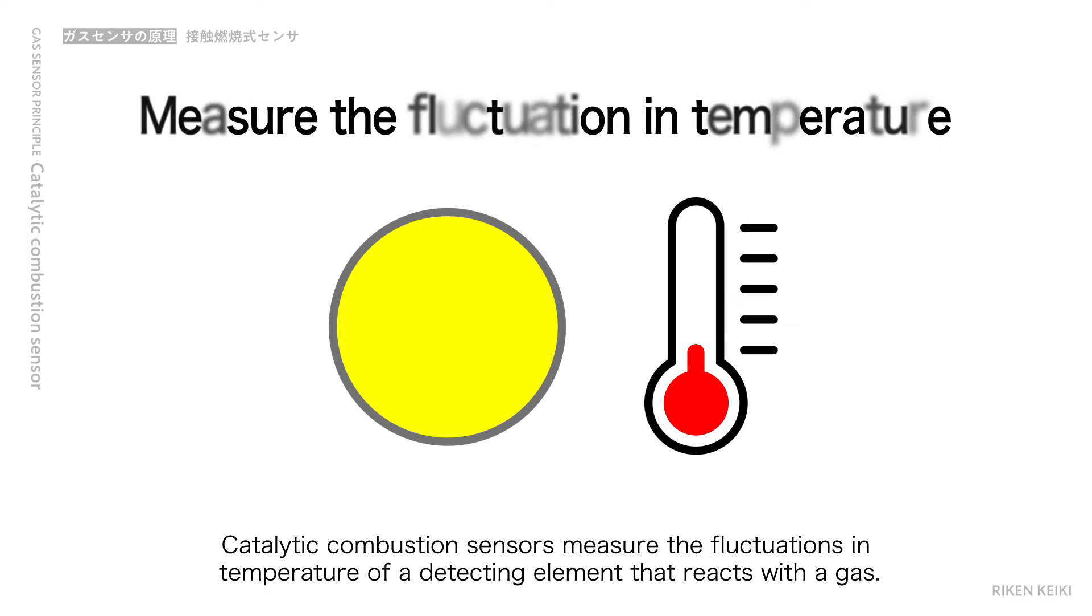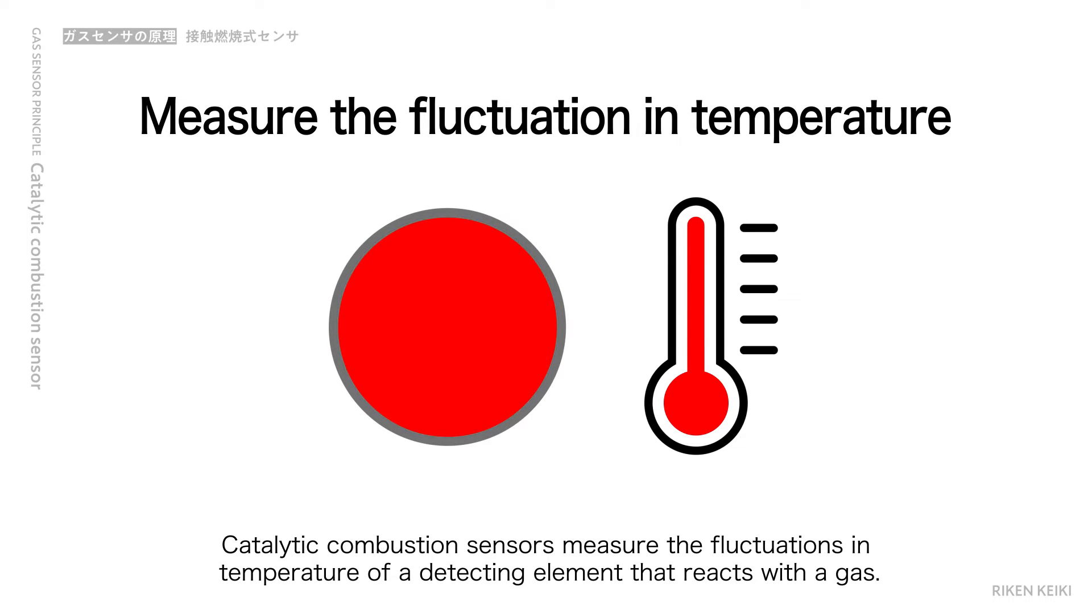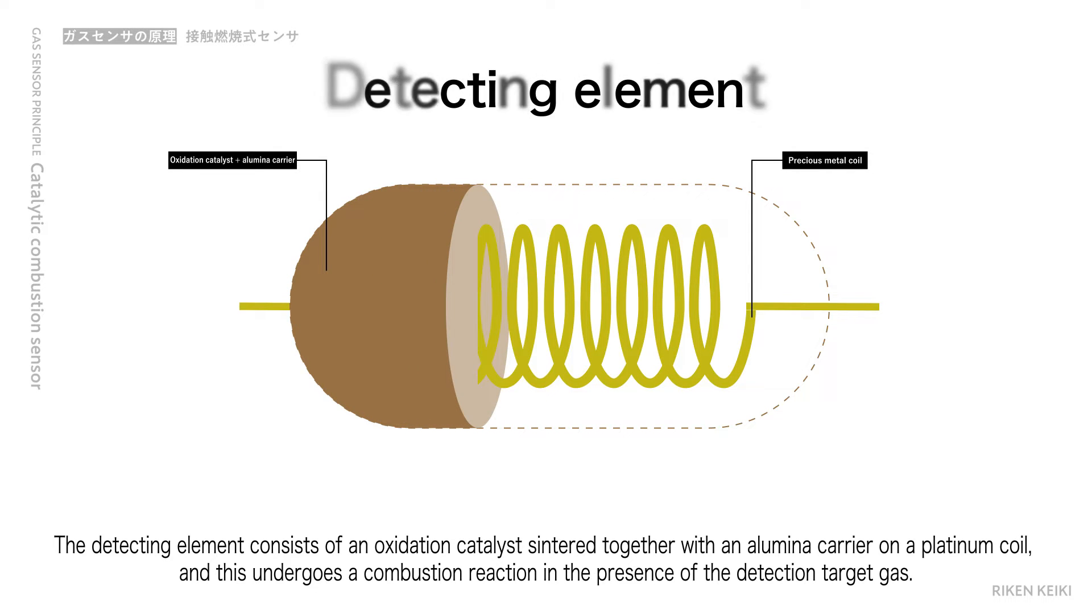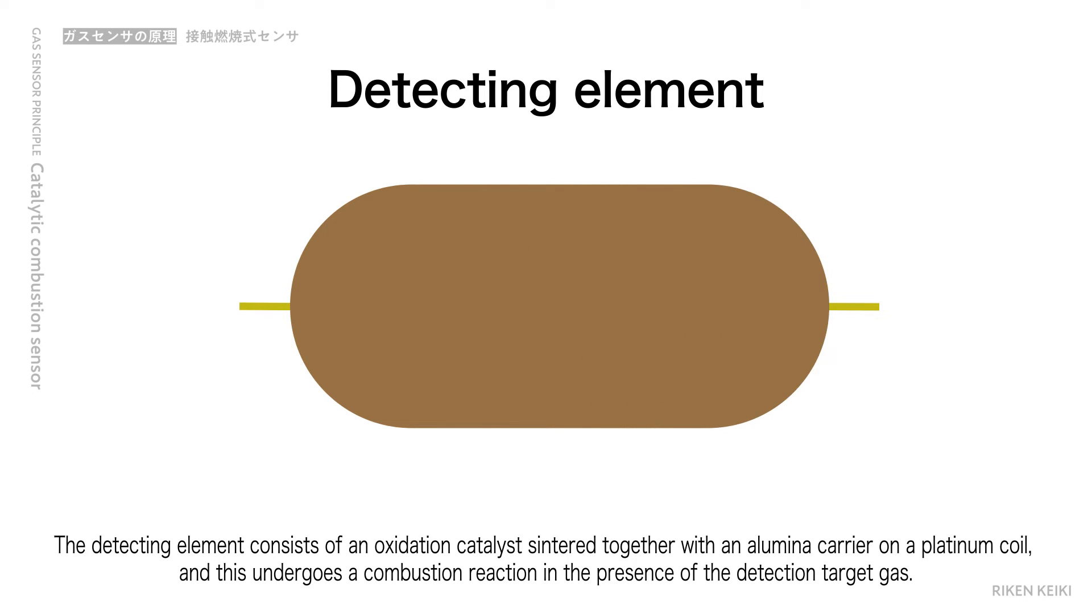Catalytic combustion sensors measure the fluctuations in temperature of a detecting element that reacts with the gas. The detecting element consists of an oxidation catalyst sintered together with an alumina carrier on a platinum coil, and this undergoes a combustion reaction in the presence of the detection target gas.